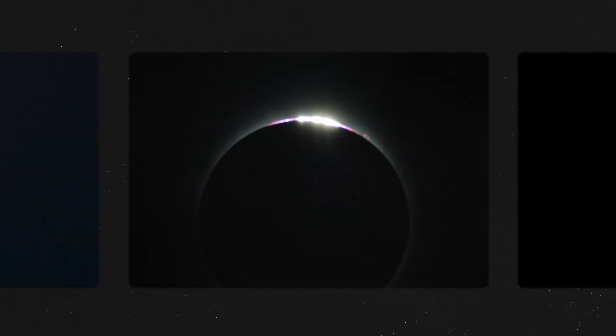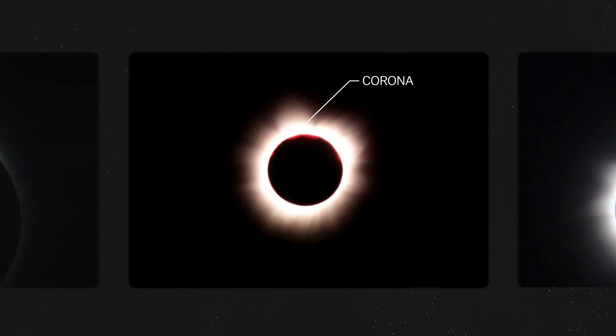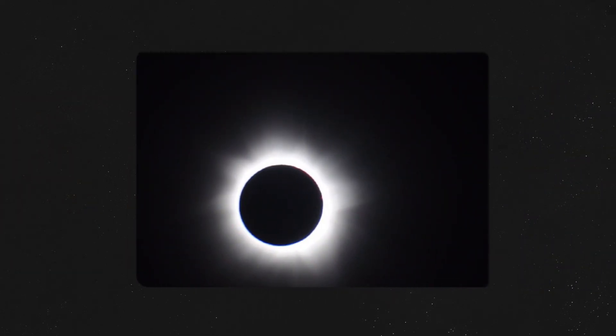Now you can see the pearly glow of the sun's corona, and the pink and red light from the hydrogen gas of the chromosphere. Together, these make up the sun's outer atmosphere. And a total solar eclipse is the only occasion you have to lay eyes on it. This is totality. And if you get a chance to see it, you should.